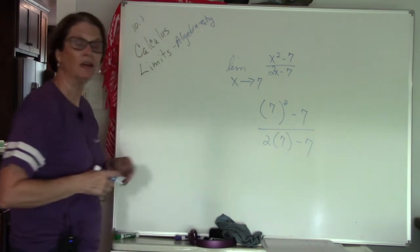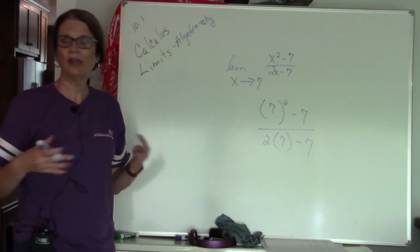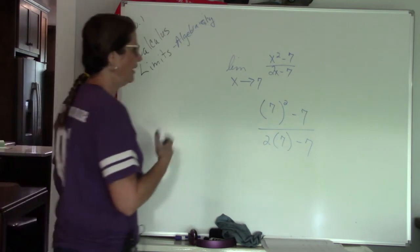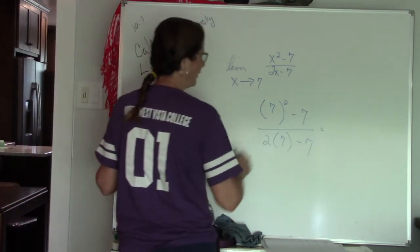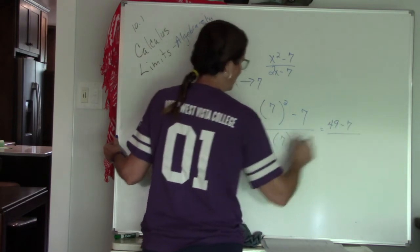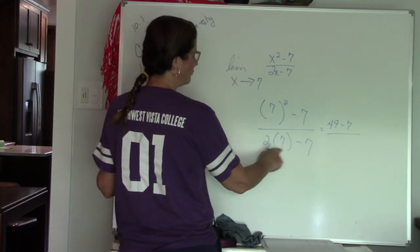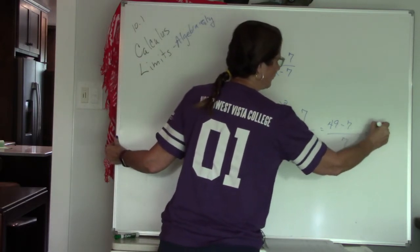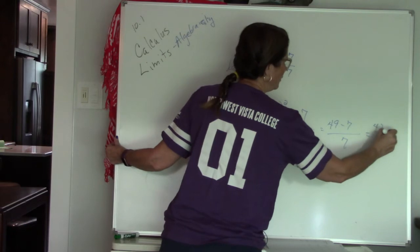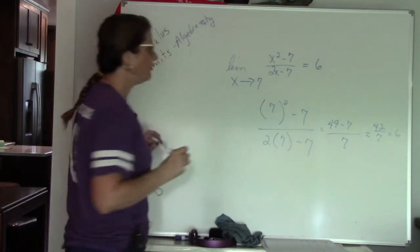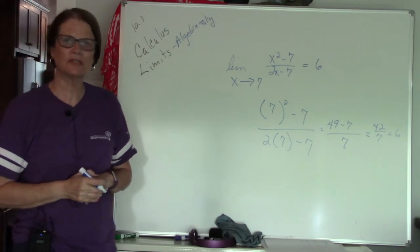Okay, now if it works out, your answer is the limit. The limit does exist at that point. So here I have 49 minus 7. Here I have 2 times 7 is 14. 14 minus 7 is 7. 49 minus 7 is 42 over 7. So the limit at 7 is the value 6.